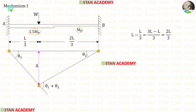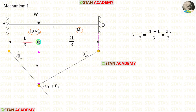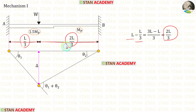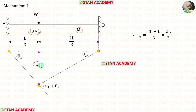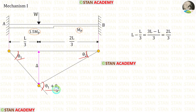Now let us make the first mechanism. In this mechanism let us assume that the plastic hinge occurs under the point load W. This distance is L upon 3, and the remaining distance is 2L upon 3, found by subtracting from L. Let us keep delta as the virtual displacement due to the load W, this angle as theta1, and this angle as theta2. So the angle at the plastic hinge should be theta1 plus theta2.